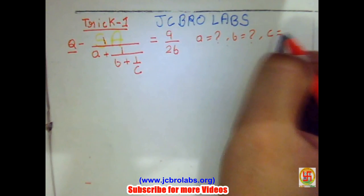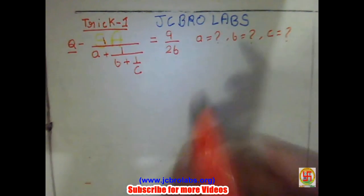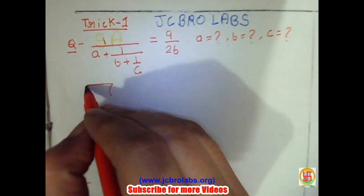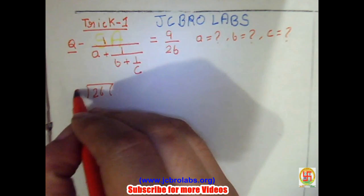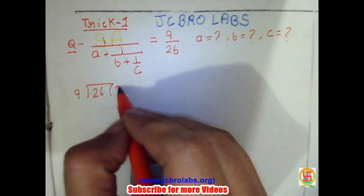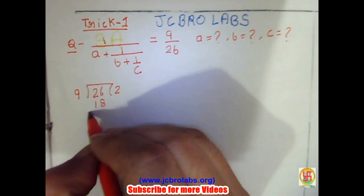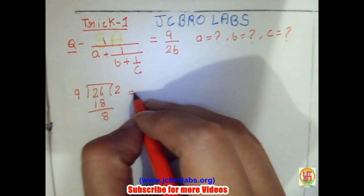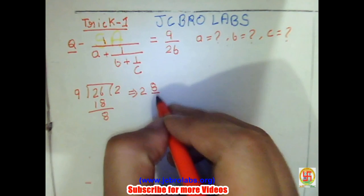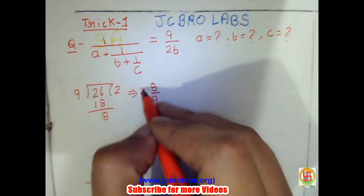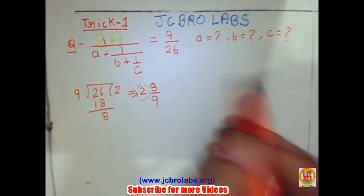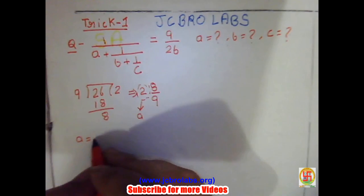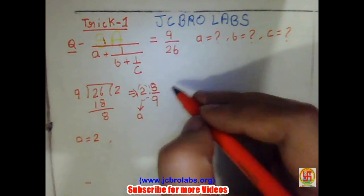This is very simple. Take the denominator 26 and divide it by 9. 9 times 2 is 18, and we are left with remainder 8. So it can be written as 2 + 8/9. This 2 is the value of a, that means a equals 2.